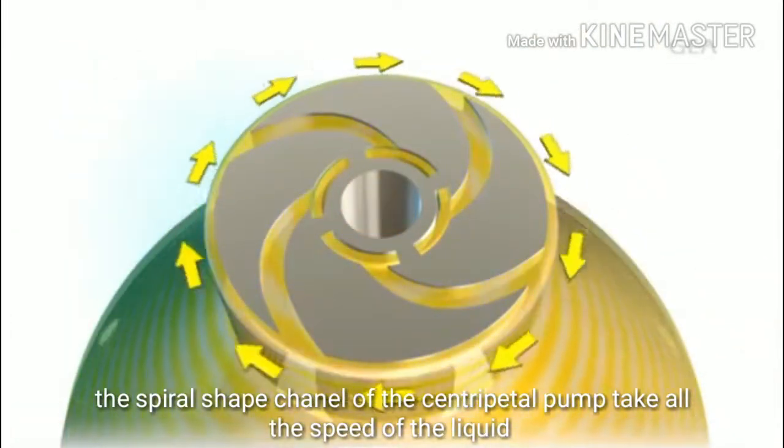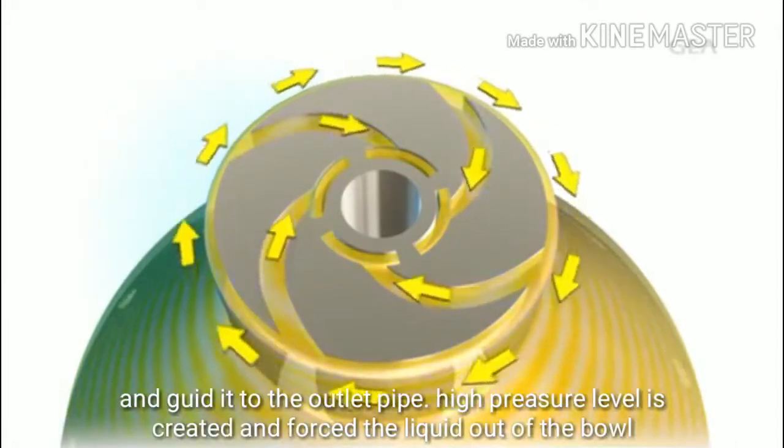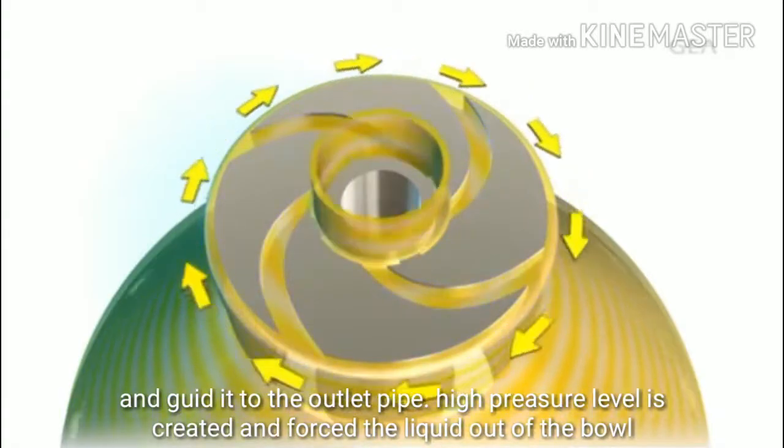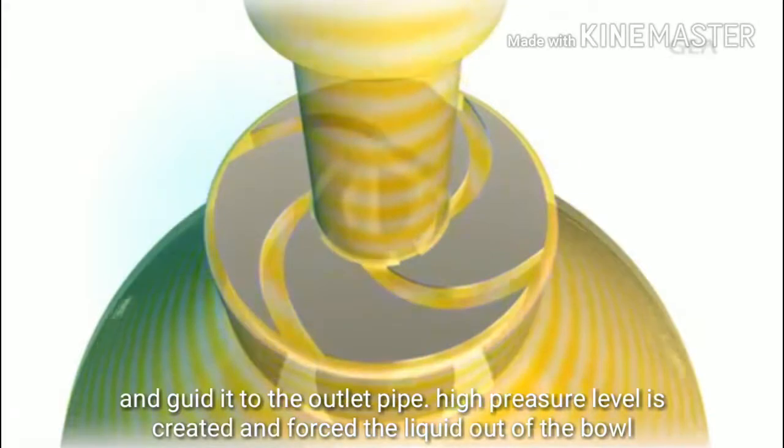The spiral shaped channels of this centripetal pump take up the speed of the liquid and guide it to the outlet pipe. A high pressure level is created there, which forces the liquid out of the bowl.